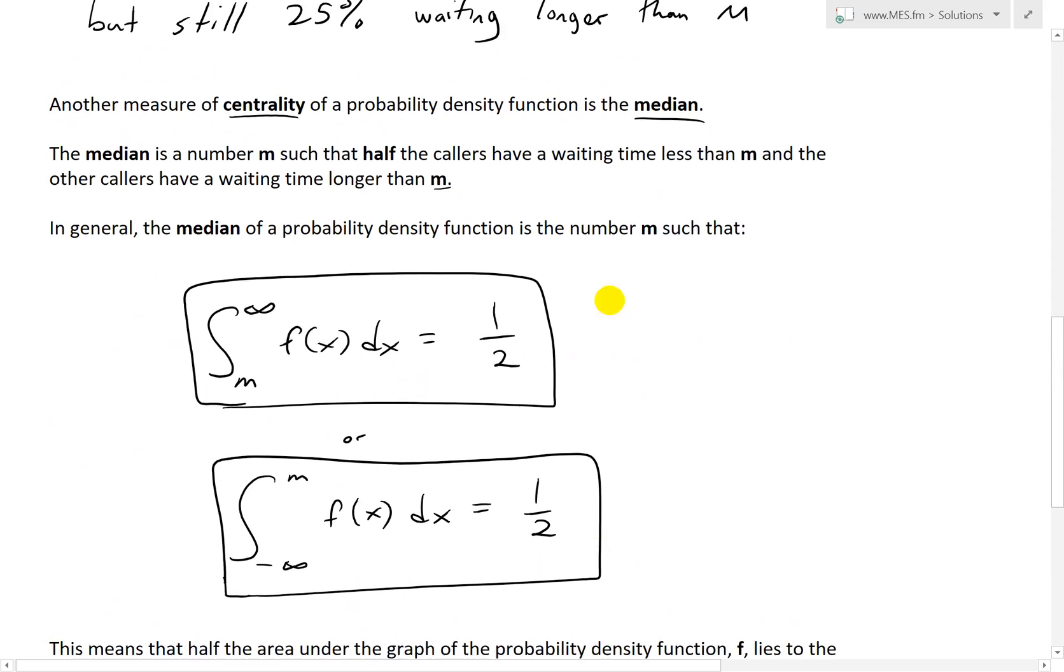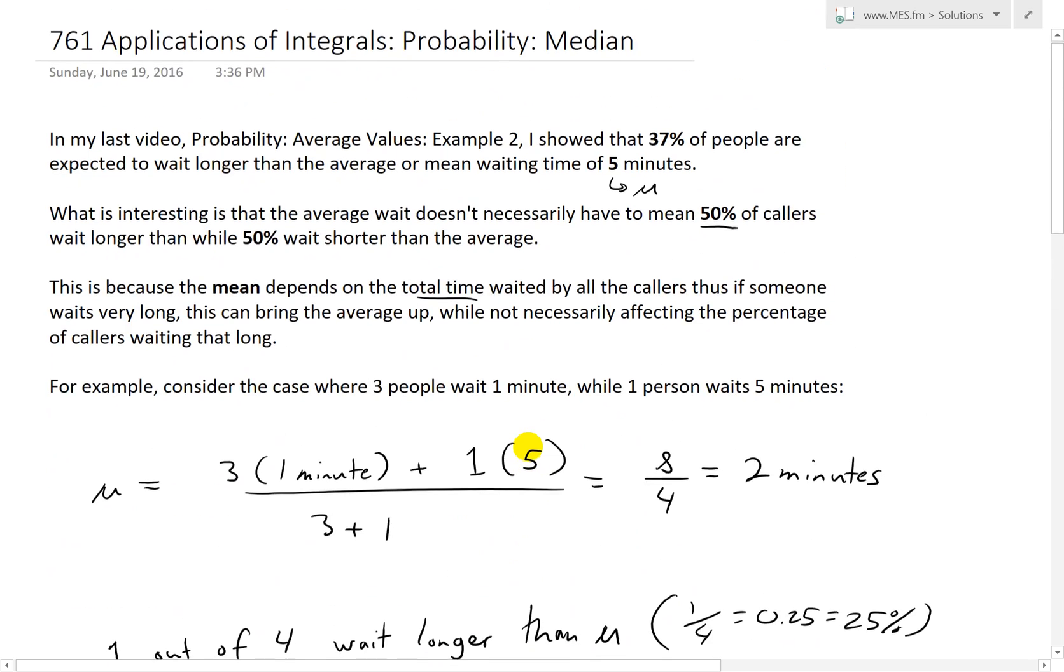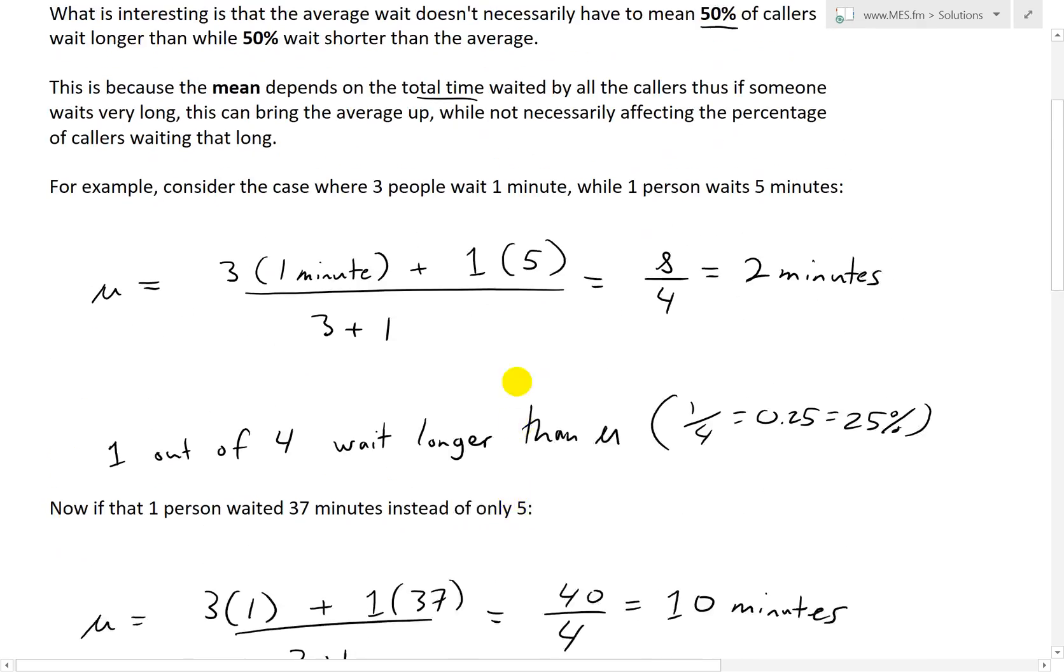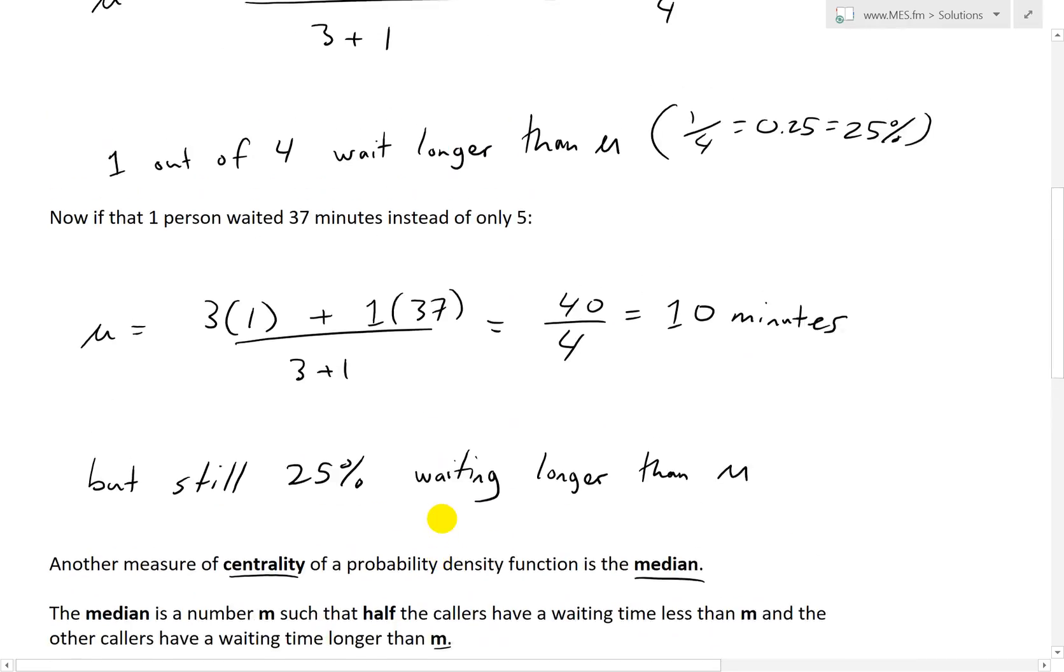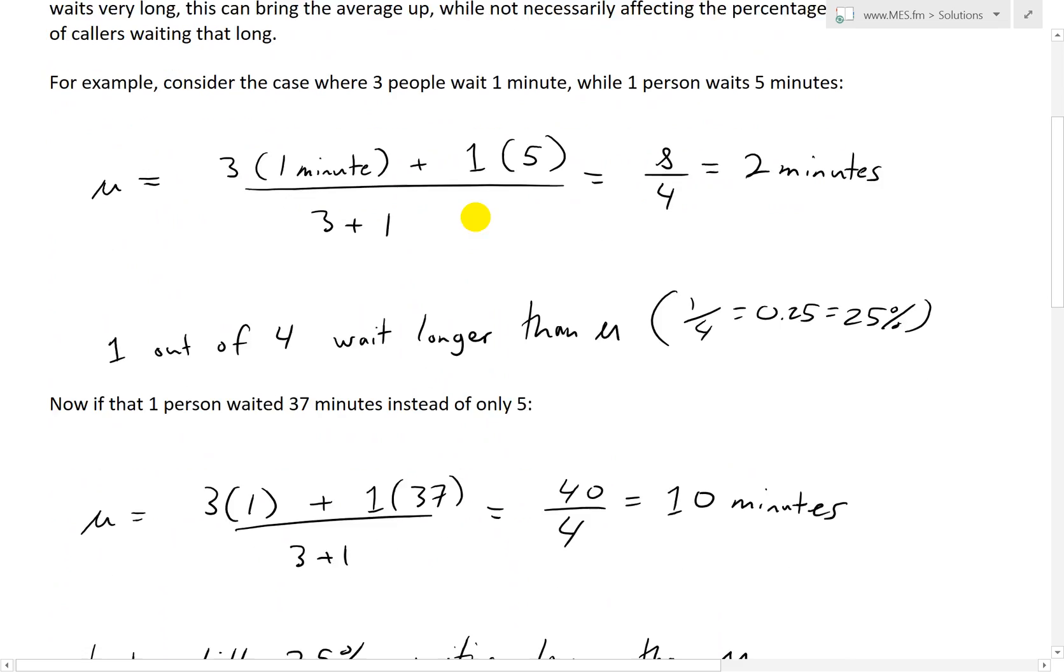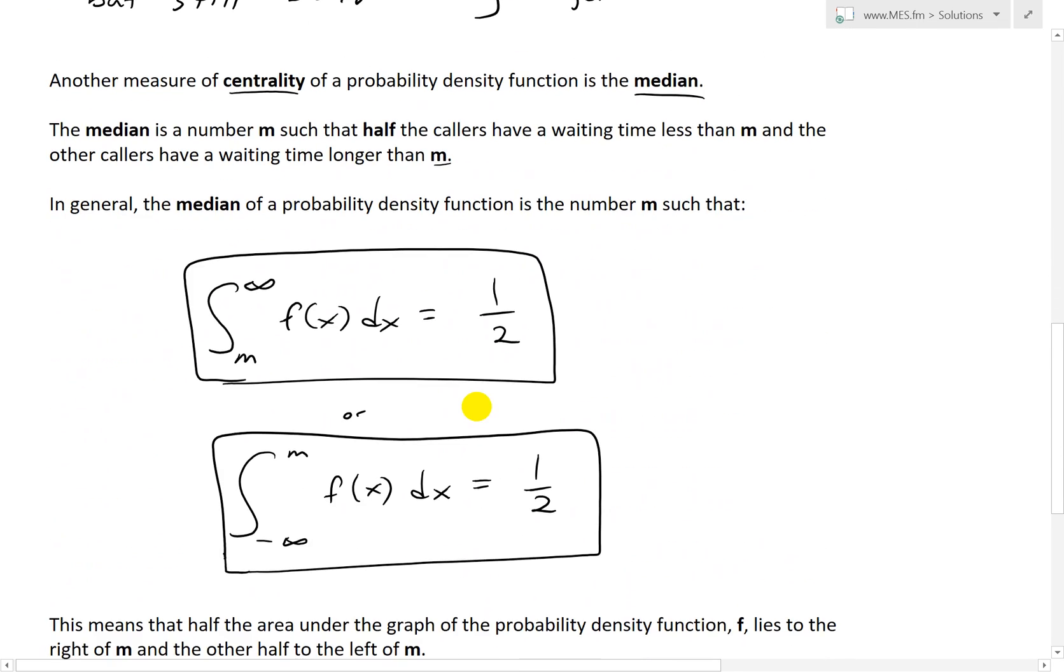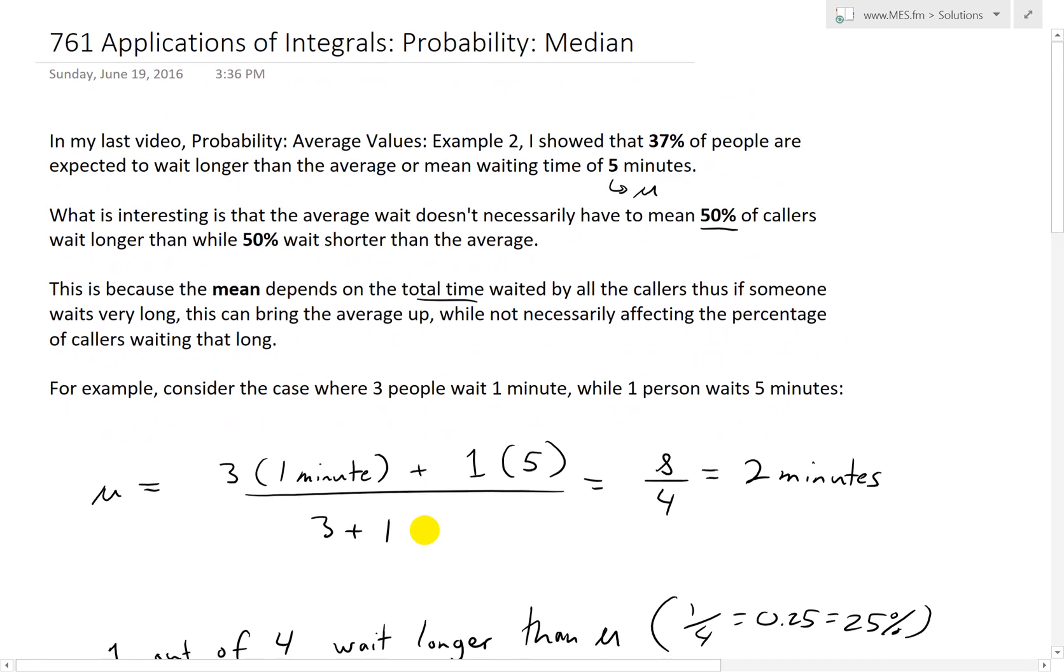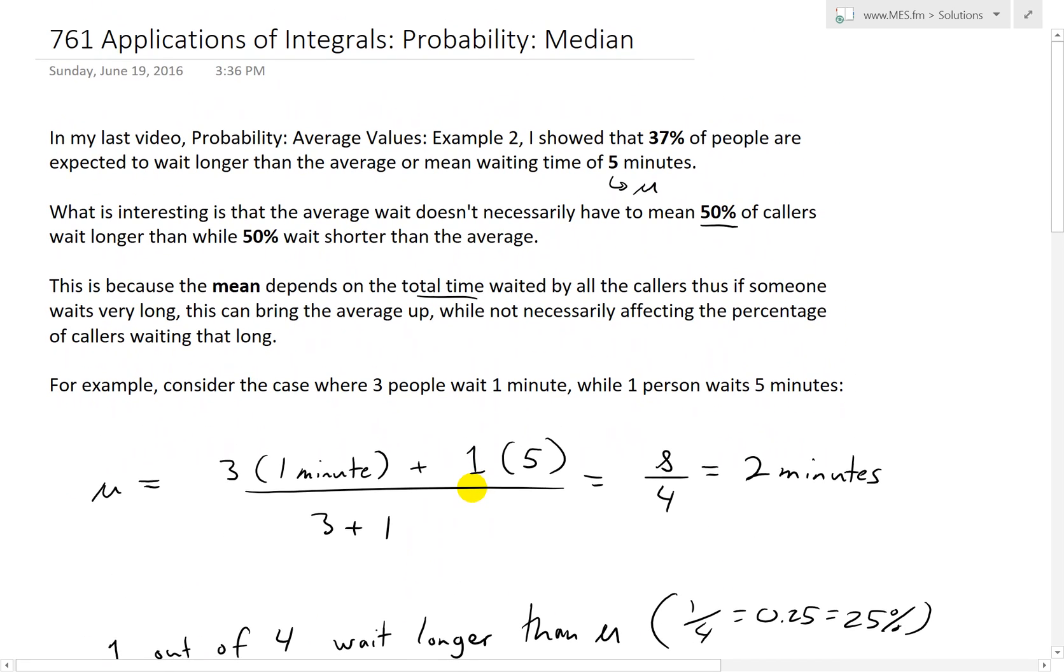That is all for today. Hopefully you learned from this video on the median and the need to find different centrality measures as opposed to strictly the average, because the average is dependent on the time weighted. But if you want to deal more with the centrality of the number of people or sample size, the median might be a better measure. Thanks for watching. Get all these notes in the link below. Stay tuned for another Math Easy Solution.